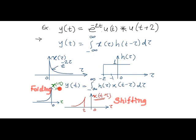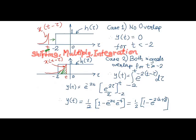In the next case we start shifting of x of t minus tau over a fixed h of tau. In the first case when both signals don't overlap, output will remain 0 for t less than minus 2.